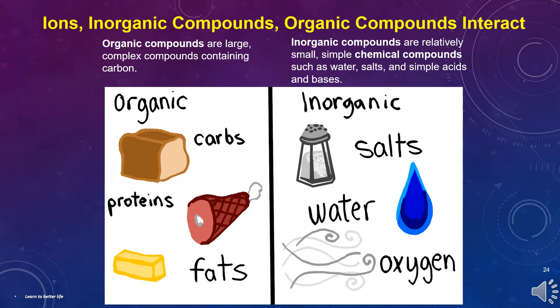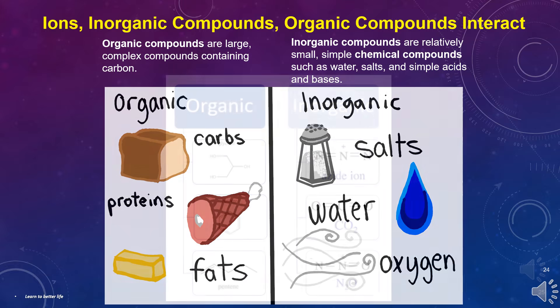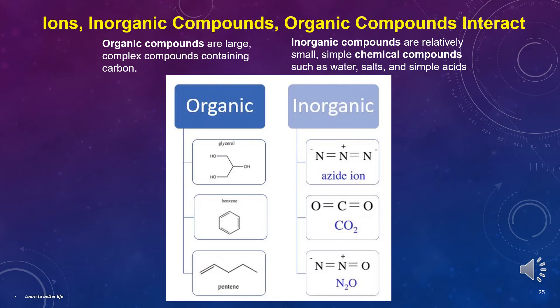The body is composed of ions, inorganic compounds, and organic compounds that interact. Organic compounds are large, complex compounds containing carbon, such as carbohydrates, lipids, proteins, and nucleic acid. Inorganic compounds are relatively small, simple chemical compounds such as water, salts, and simple acids and bases. Looking at the picture, you can see the complexity in the organic and the simplicity of the inorganic compounds.